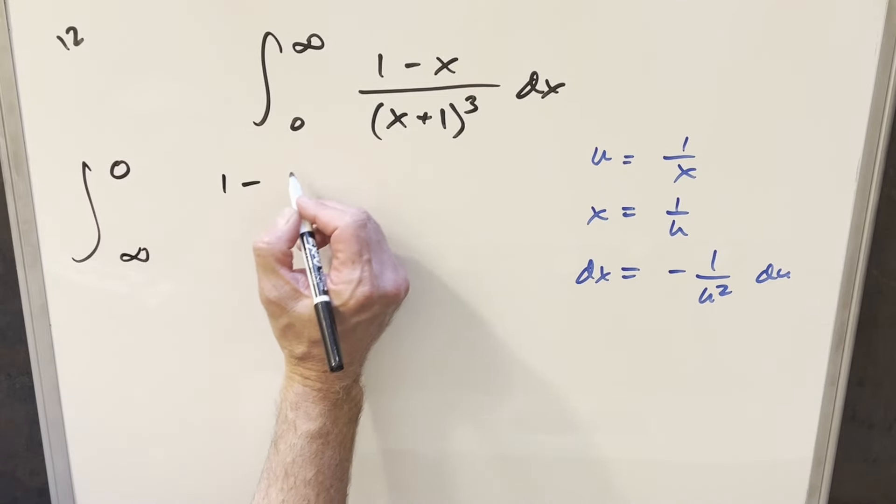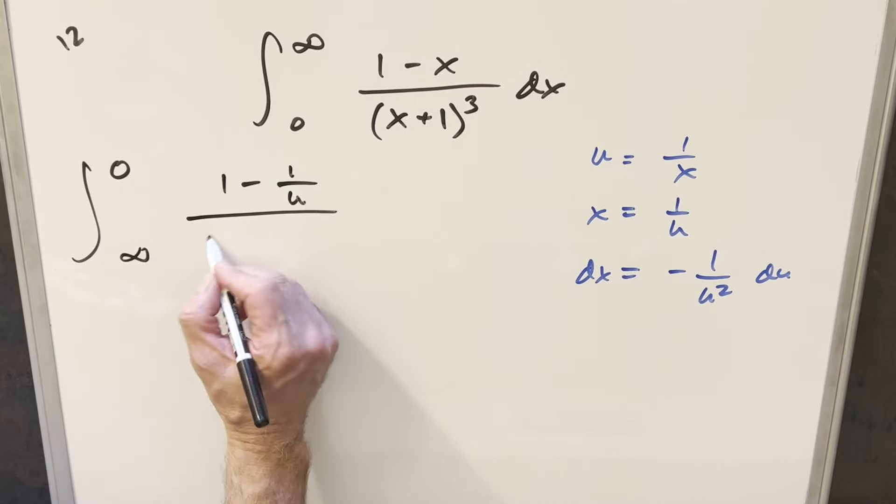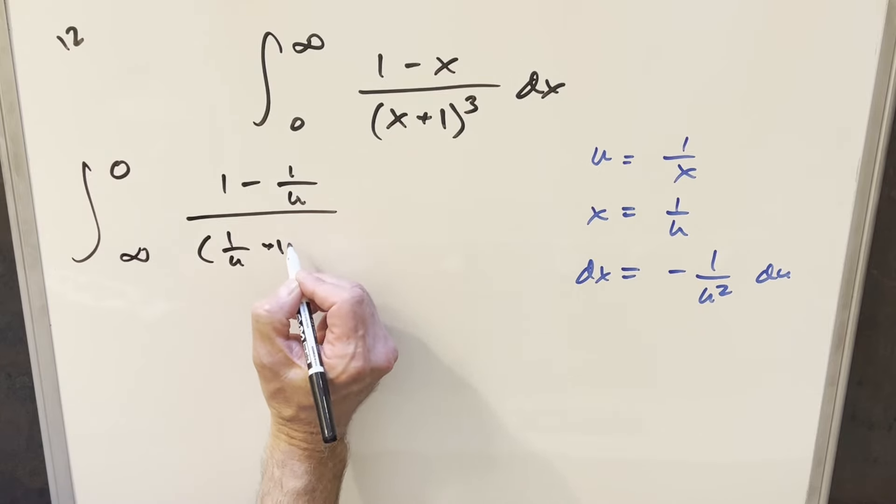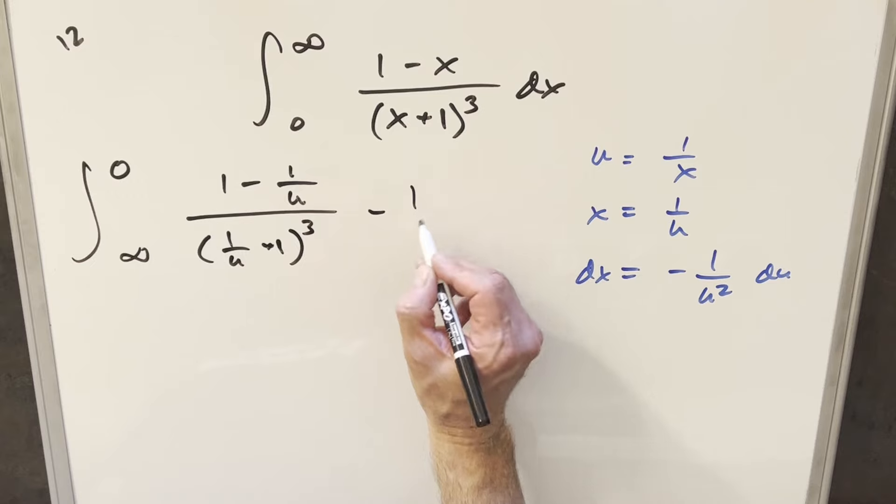1 minus x is going to become 1 minus 1 over u. And then this is going to become 1 over u plus 1 all cubed. And then we have, for our dx value, we're going to have this over here.